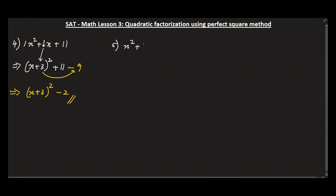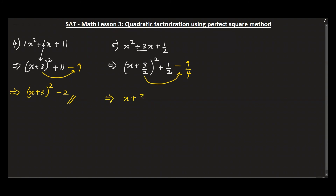Next, a similar one: x² + 3x + ½. You get the half of 3, which is 3/2, so (x + 3/2)², plus ½ — copying that term — and then always minus the square of this one, which is 9/4. When you simplify, you get (x + 3/2)², then getting the common denominator: multiplying ½ by 2/2 gives 2/4, so 2 − 9 = −7, giving −7/4. That would be the answer.